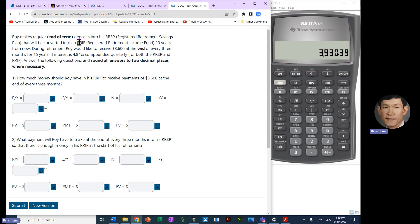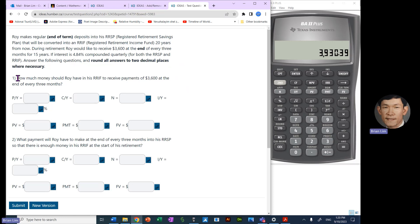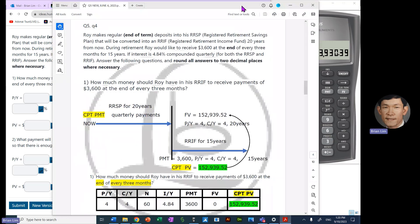All right, so the RRIF, the amount that Roy would like to receive. Roy would like to receive 20 years from now these amounts of money. During retirement, Roy would like to receive $3,600 at the end of every three months for 15 years. If interest is 4.84% compounded quarterly for both the RRSP and the RRIF, answer the following questions and round all answers to two decimal places where necessary. So how much should Roy have in his RRIF to receive payments of $3,600 at the end of every three months? Now let's maybe look at the representation of what this is about.